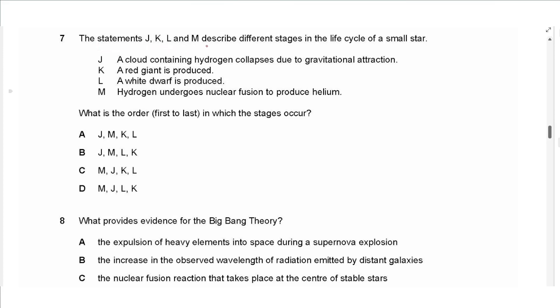The next question says, the statements J, K, L, and M describe different stages in the life cycle of a star. A cloud containing hydrogen collapses due to gravitational attraction. A red giant is produced. A white dwarf is produced. Hydrogen undergoes nuclear fusion to produce helium. At first we have the nebula, which is the hydrogen cloud, which then causes the fusion to start by attraction, as gravitational pull pulls the atoms more close together. They gain speed and fusion starts.